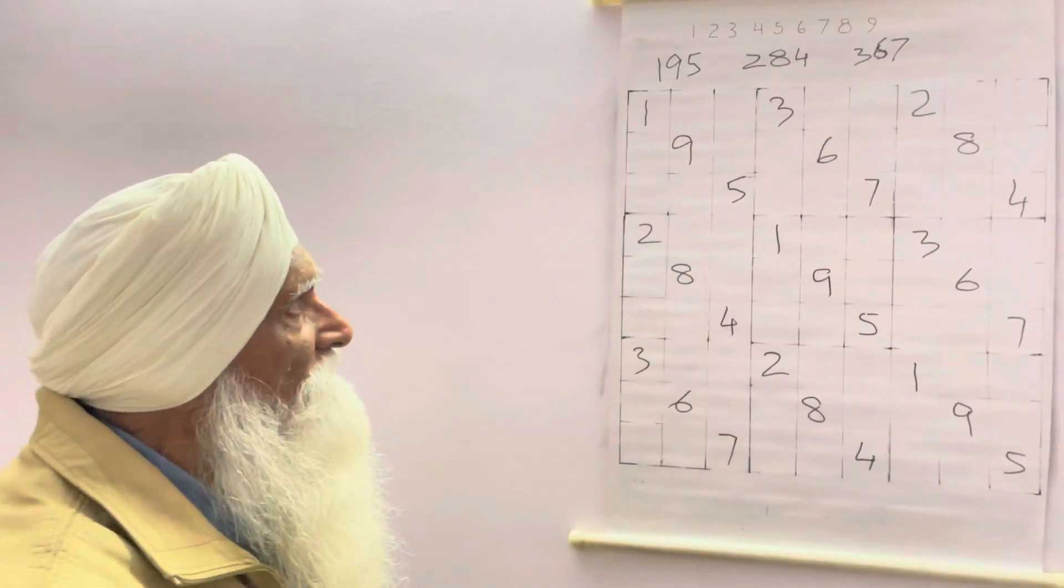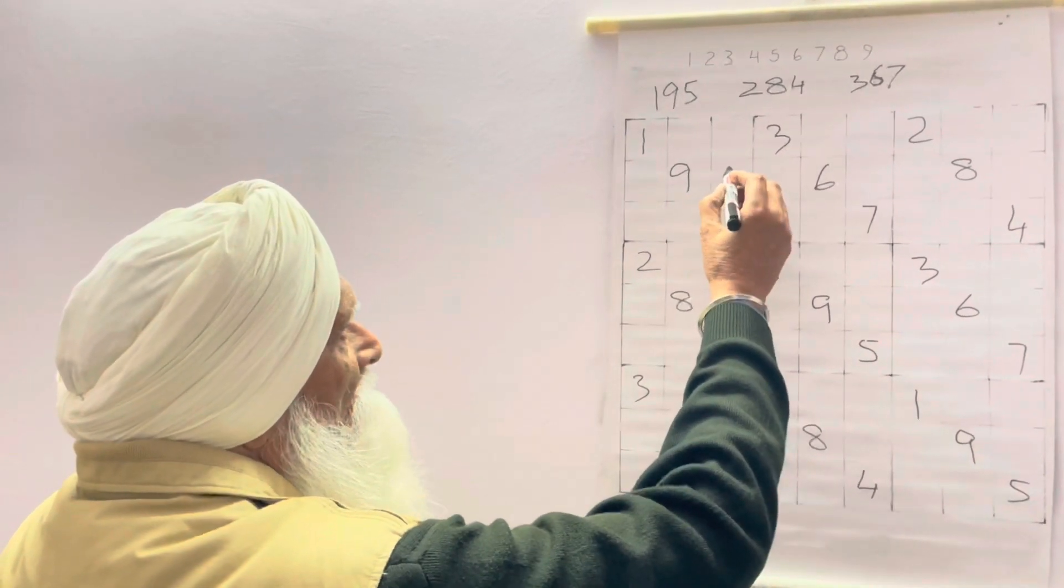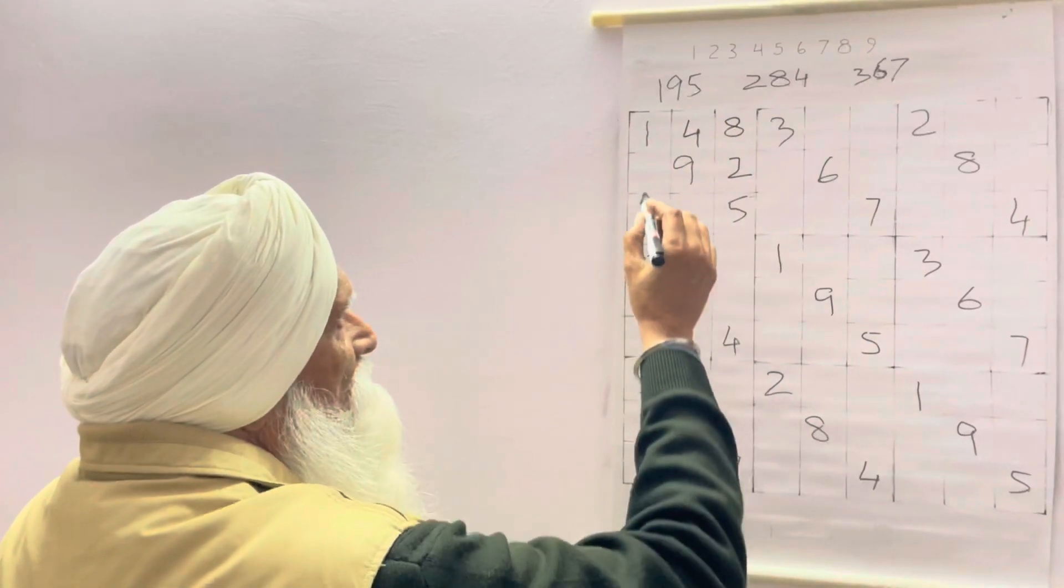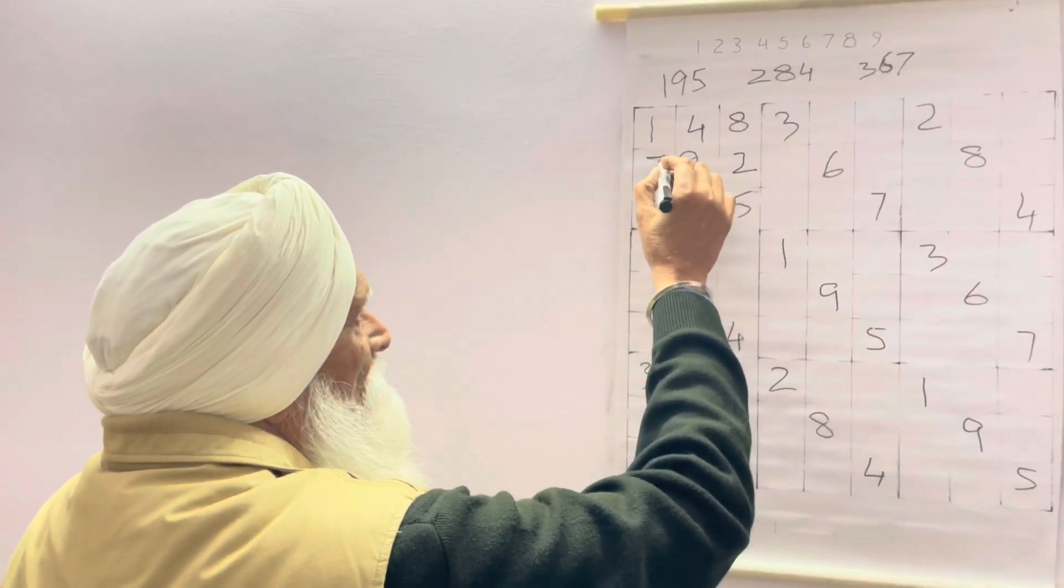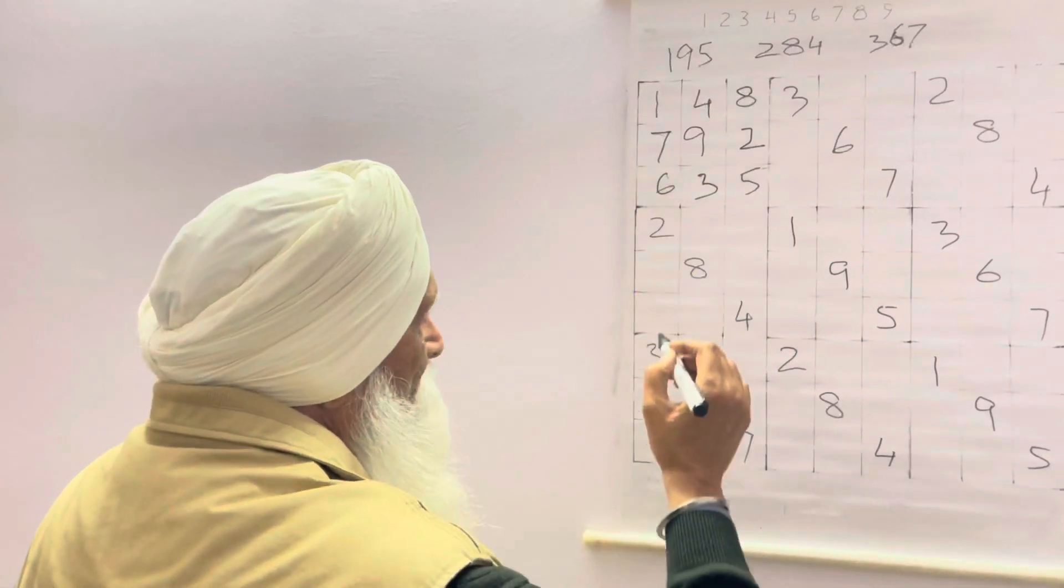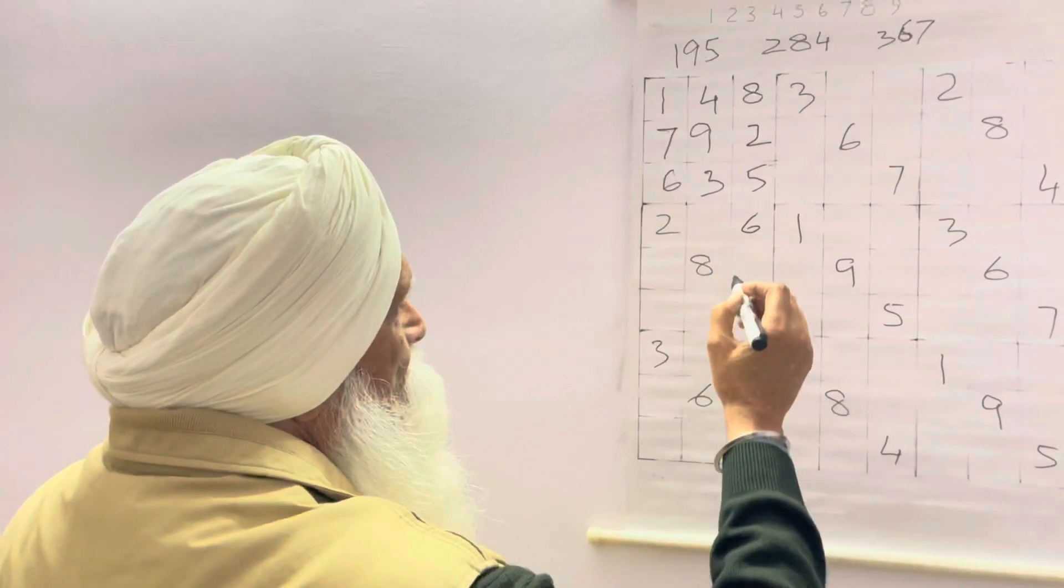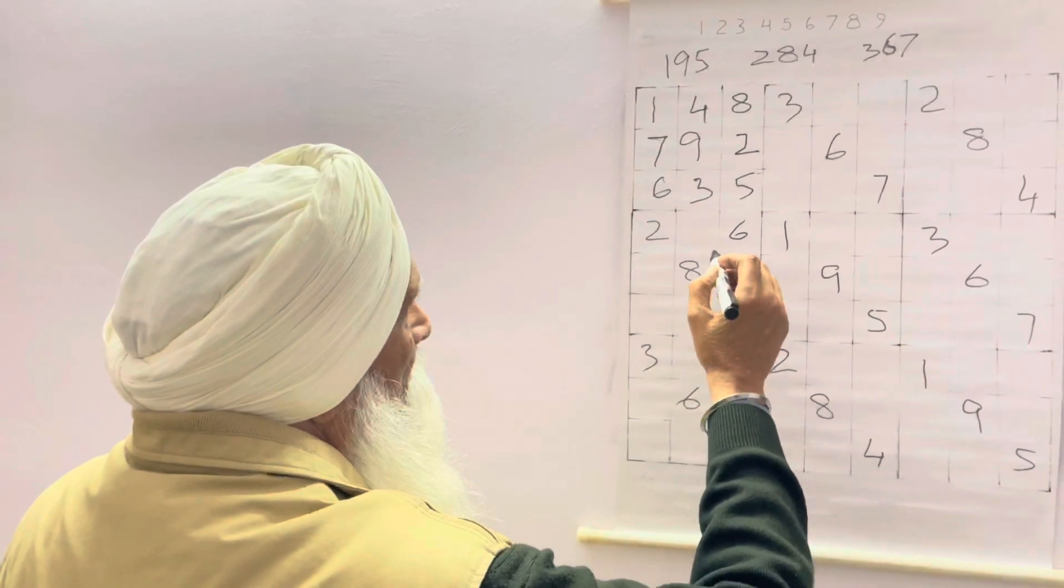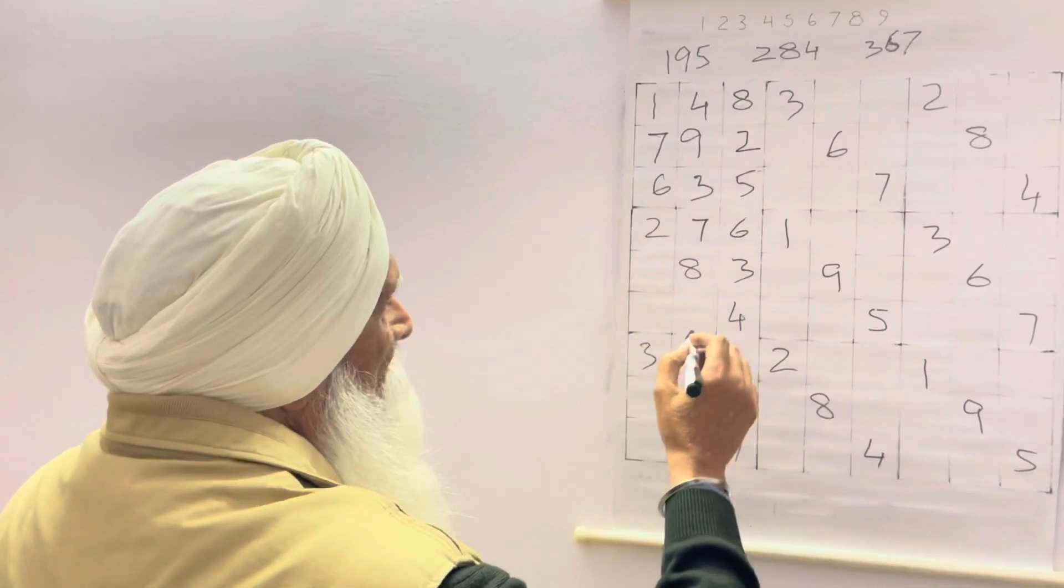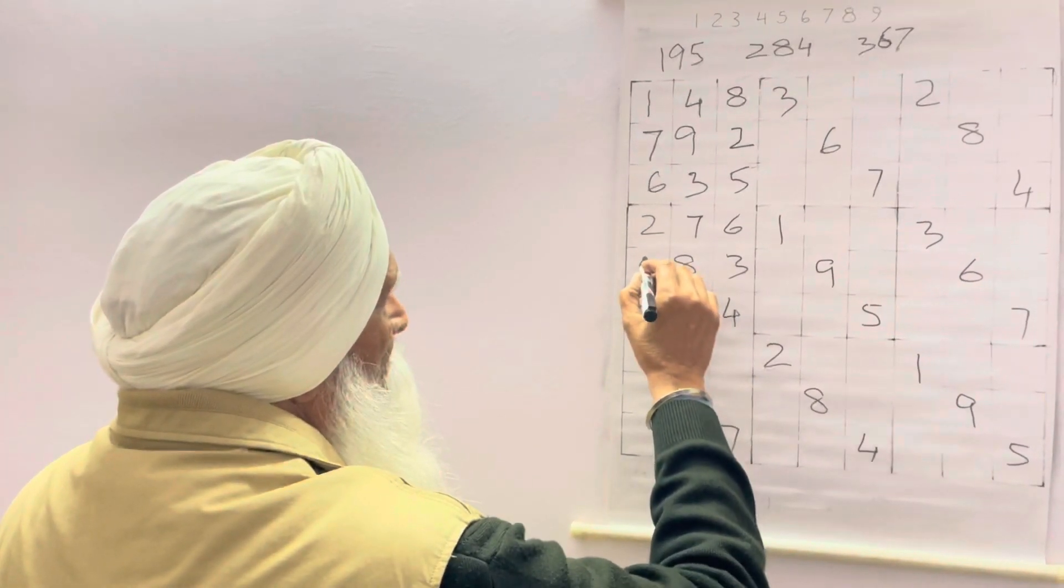So we start with 2, 8, 4. Here will come 2, 8, 4. 3, 6, 7, 7, 3, 6. So 3, 6, 7; 6, 7, 3; 7, 3, 6. 1, 9, 5; 9, 5, 1.